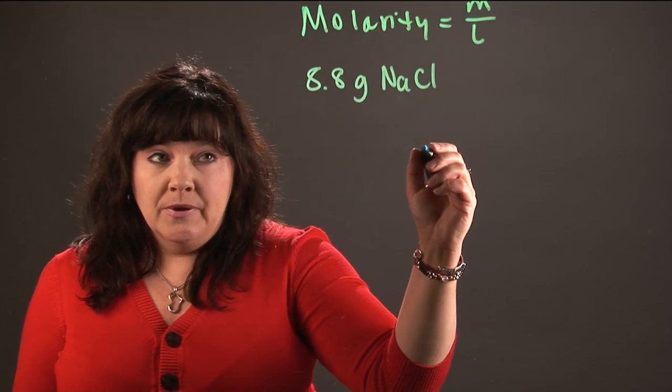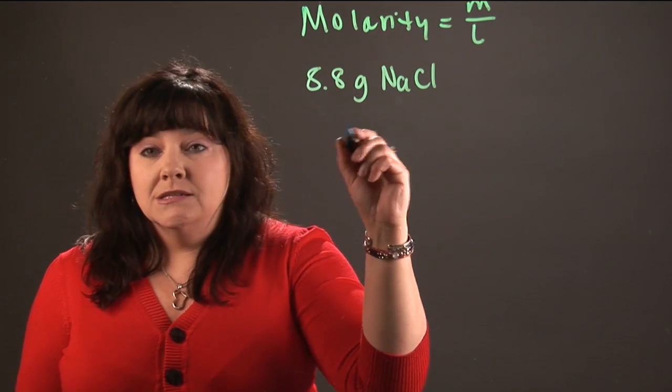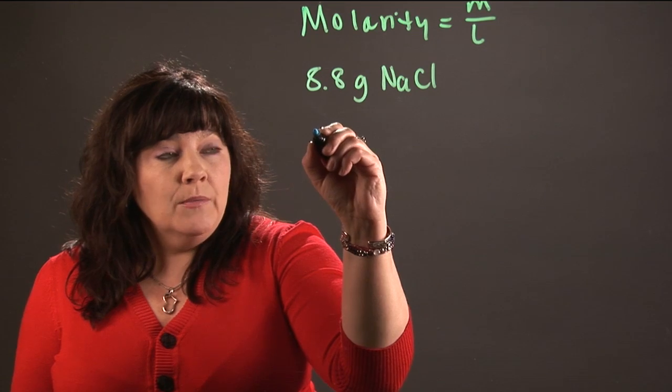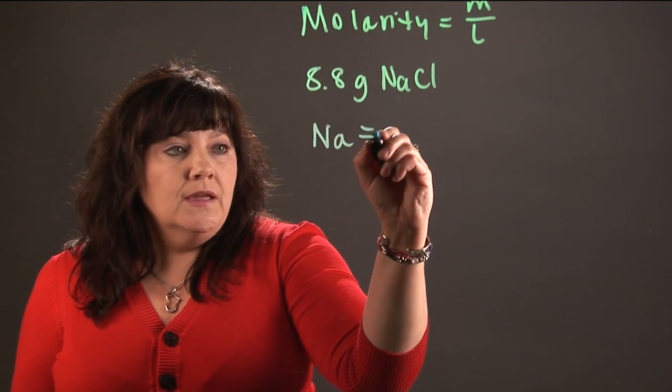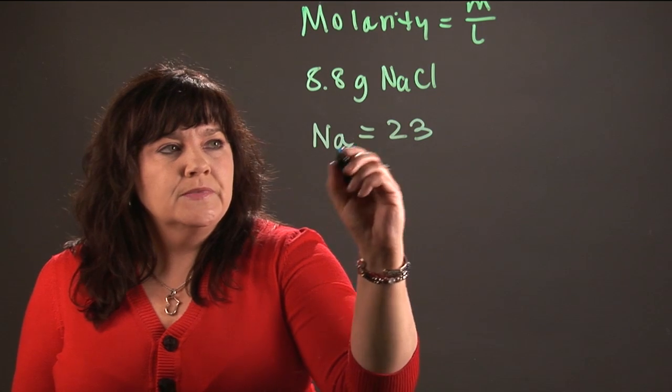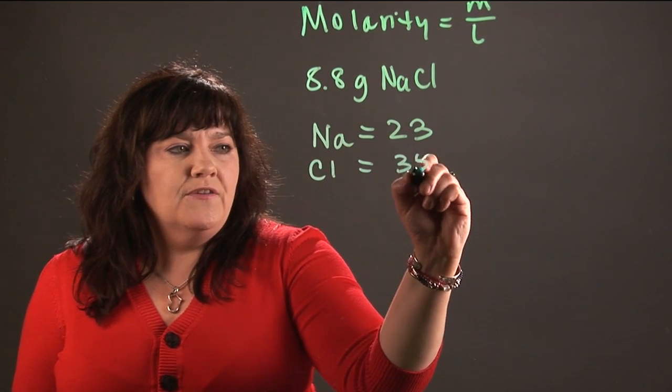And for that we have to go to the periodic table. On the periodic table, each element is listed in a box, and that box is going to have the atomic number. So the atomic number of sodium is 23. We're going to round it up to 22 whole numbers. And the atomic weight of chlorine is 35.5.